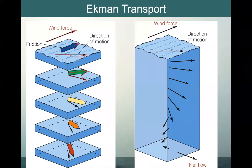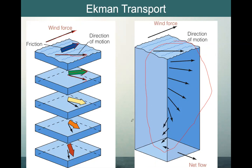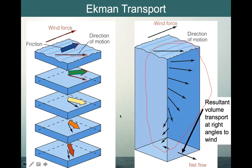If we take all of these vectors of the direction of motion and add them all up — integrate over the whole column — we see that our net flow, the resultant volume transport, is at right angles to the wind. Our net flow is exactly at right angles to the wind, which would be to the right in the northern hemisphere, and to the left in the southern hemisphere.